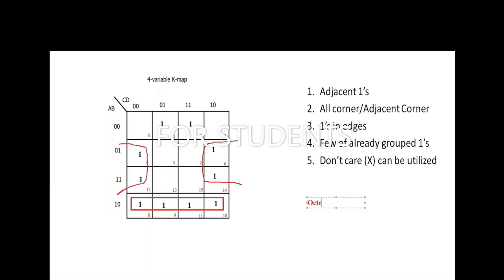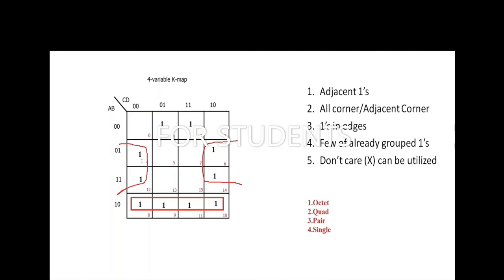Octet is grouping of 8 cells, quad is grouping of 4 cells, pair is grouping of 2 cells, and single is when nothing else is possible. In a 4-variable KMAP, an octet gives you 1 variable, a quad gives you 2 variables, a pair gives you 3 variables, and a single gives you 4 variables. For a 3-variable KMAP, a single gives you 3 variables, and so on. Learning the 4-variable KMAP makes it easy to work with any map size.